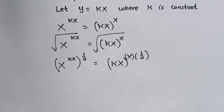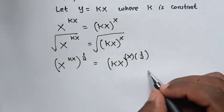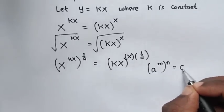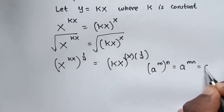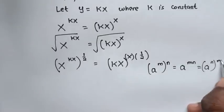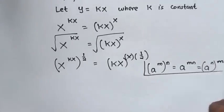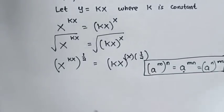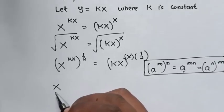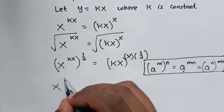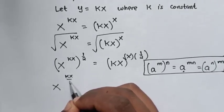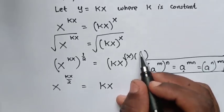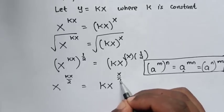From here in this exponent, we apply the exponential rule that (a^m)^n = a^(mn). So we multiply the powers: x^(kx × 1/2) = x^(kx/2), and (kx)^(x × 1/2) = (kx)^(x/2).